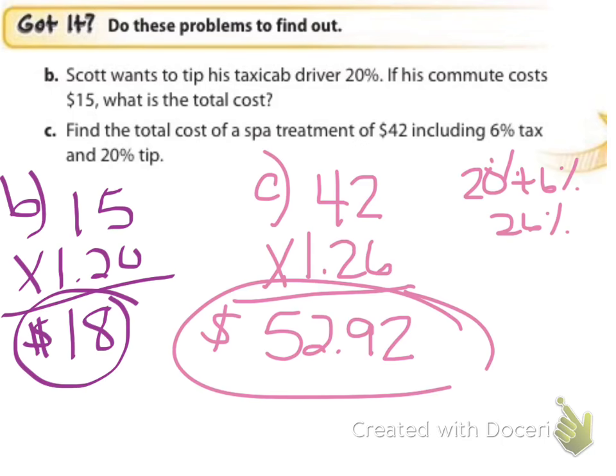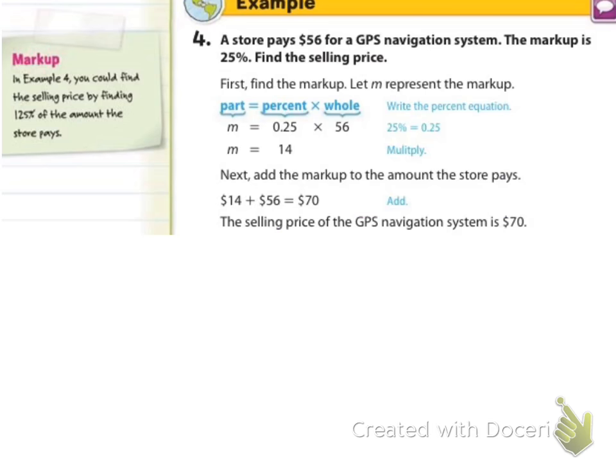Alright, so B is $18. I use again the method where I take the percentage, I add it to 100% to cover everything at once. And so that's $18. C is going to be the $42 times, and I combined my 20% and my 6% sales tax, and that's 26%. So when I did it times 1.26, I came out with $52.92. So that's how much it would cost at the spa treatment to include tax and a 20% tip.